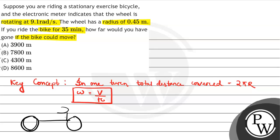So it is 0.45 radius, rotating, and angular speed is 9.1 radians per second. So what do we know? Theta equals omega into t.